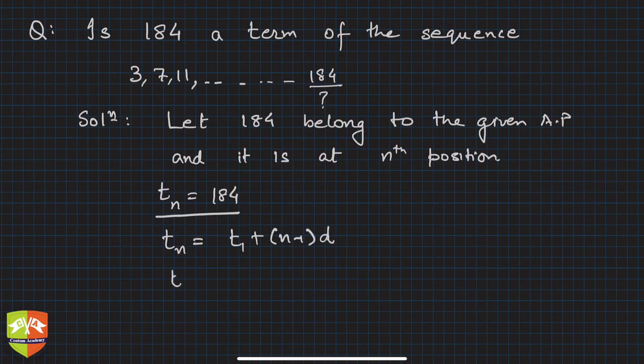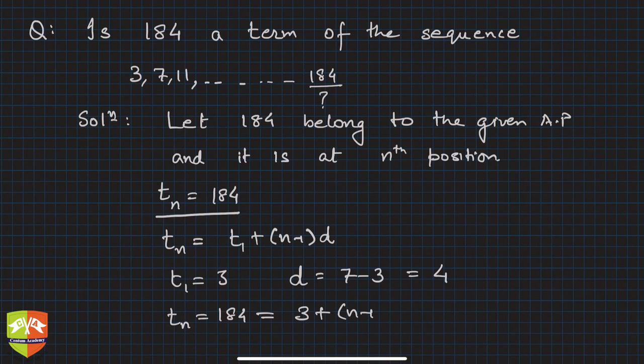We know that tn is equal to t1 plus (n minus 1)d. In this case, t1 clearly is 3, no doubts about it. d will be equal to 7 minus 3, or 11 minus 7, whichever way, which is 4. So that means tn equals 184 must be equal to 3 plus (n minus 1) times 4.